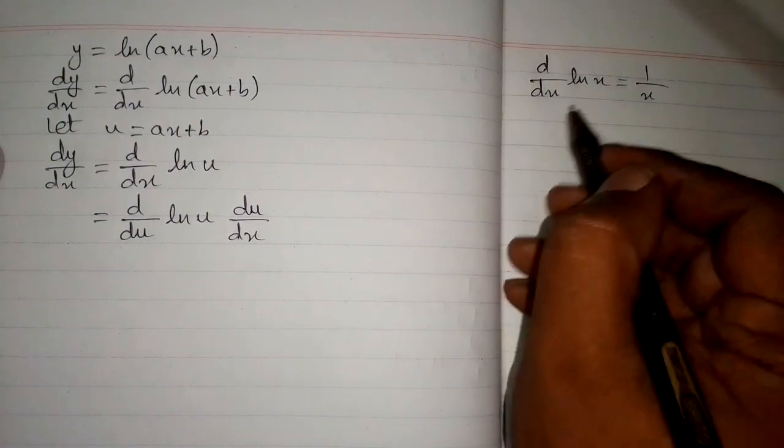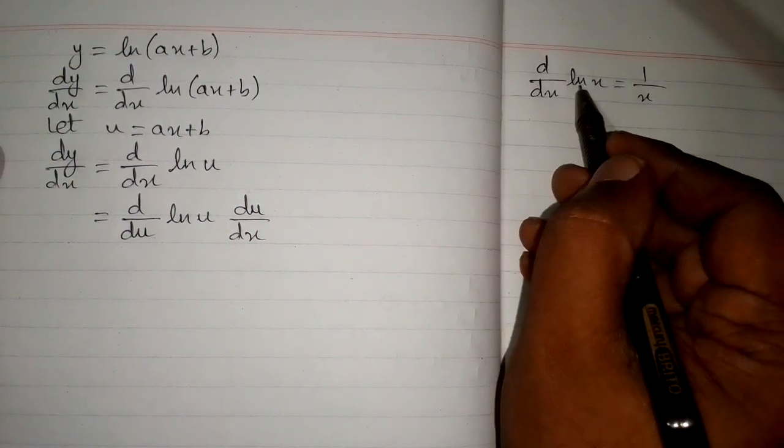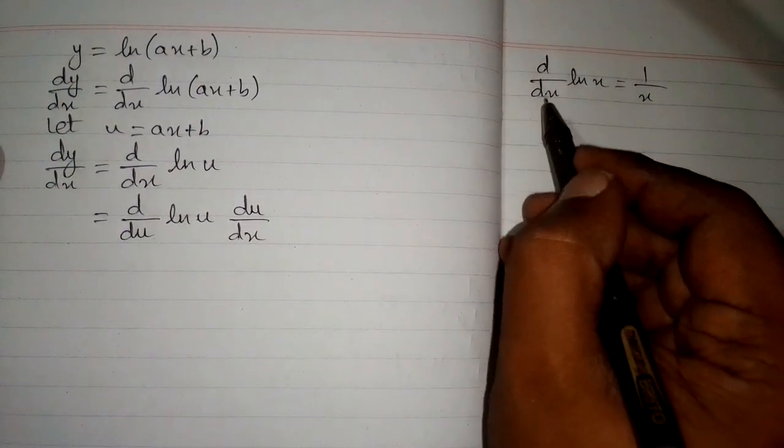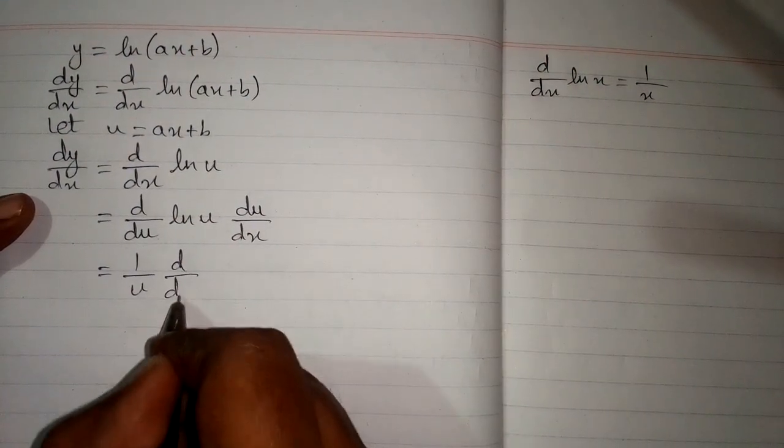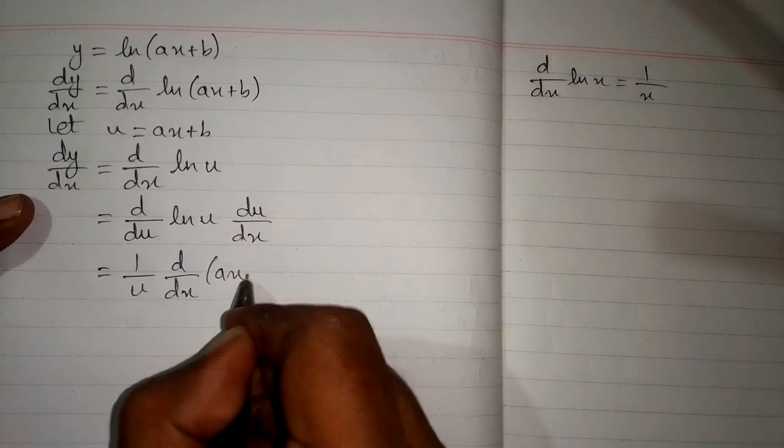Now we can apply the formula that the derivative of ln of x is 1 upon x, so the derivative of ln of u is 1 upon u multiplied by the derivative of u which is ax plus b.